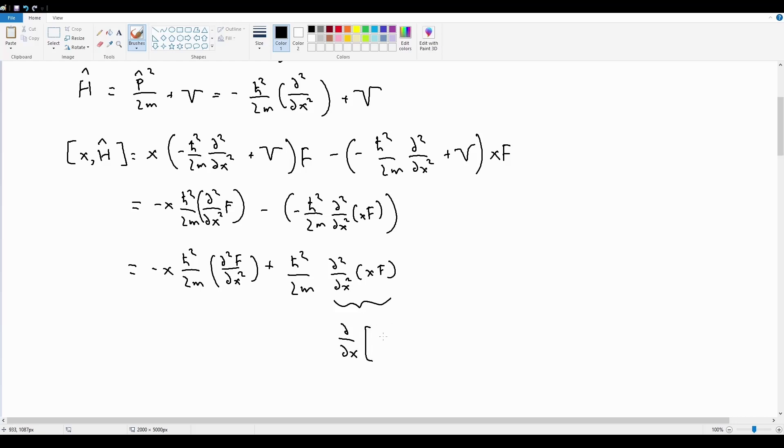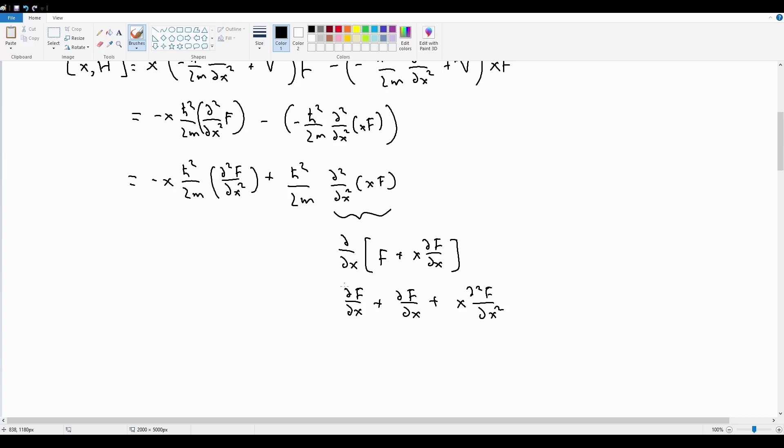These two negatives make a positive, so this is going to be h-bar squared over 2m d2 by dx squared of x times f. At this point here we can just use chain rule. This term is going to equal d by dx acting on f plus x df by dx, which is going to equal df by dx plus df by dx plus x d2 f by dx squared.